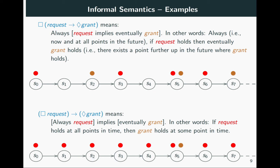Very different from the above is the following variation obtained by putting the parentheses differently: (always request) implies (eventually grant). This means that if request holds for all points in time, then grant holds for some point in time. It is a much weaker property — only if all states have red labeling is it required that some state has brown labeling.